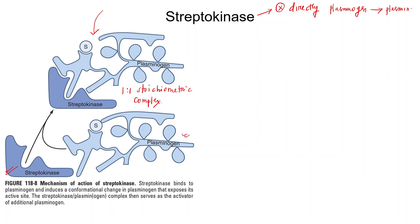This streptokinase-plasminogen complex serves as an activator of additional plasminogen. After forming this stoichiometric complex, it causes a conformational change that activates the plasminogen to convert into plasmin.